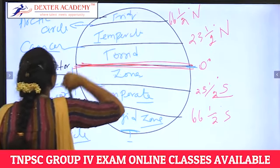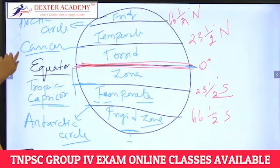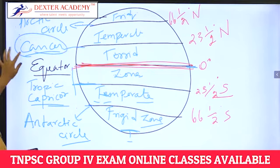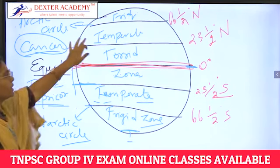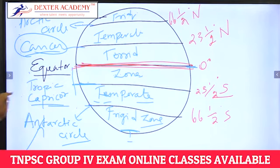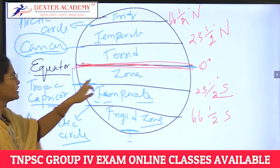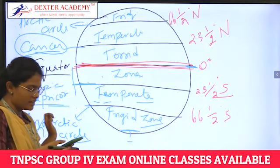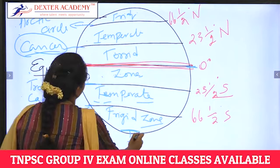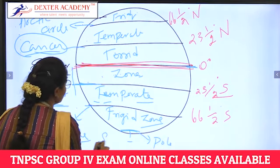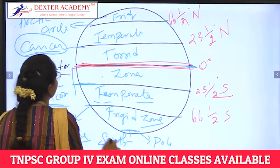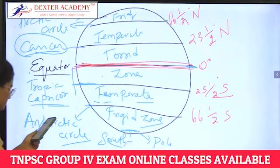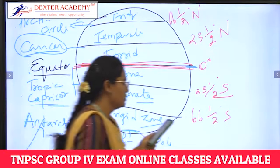If the question asks about the zone between the Arctic Circle and the Tropic of Cancer, the answer is Temperate Zone. If the question involves the Equator area, say Torrid Zone. The two poles are the South Pole and the North Pole.